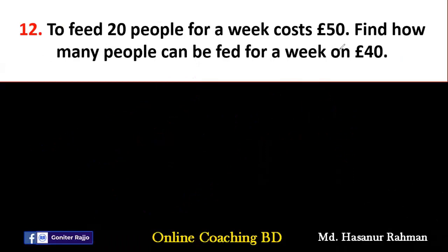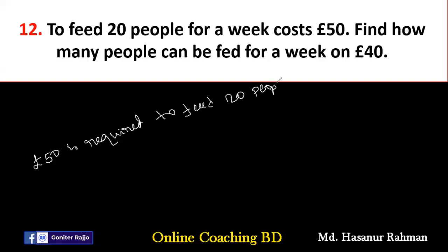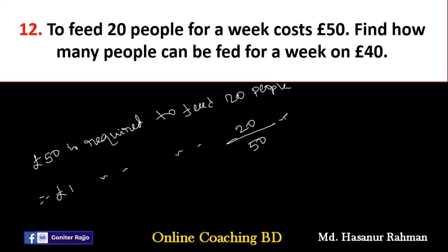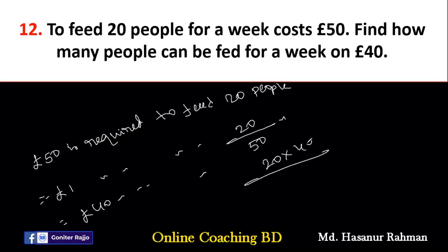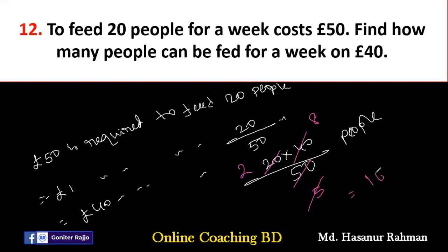Number 12: To feed 20 people for a week costs 50 pounds. Find how many people can be fed for a week on 40 pounds. 50 pounds feeds 20 people, so 40 pounds feeds 20 multiplied by 40 divided by 50 people. Dividing 50 and 20 both by 10 gives 2 by 5, then 40 by 5 is 8. So 8 multiplied by 2 = 16 people.